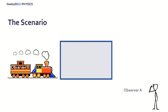Let's first understand the scenario for the paradox. We have a train with an observer inside, observer B, and another observer that's outside the train, observer A. This train is moving at a very high speed, very close to the speed of light, and it's passing through a tunnel that's exactly the same size as the train.